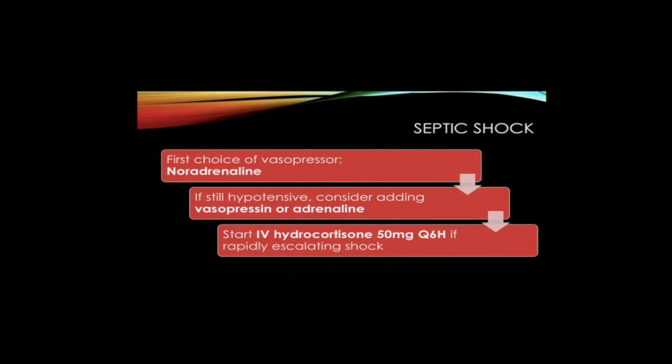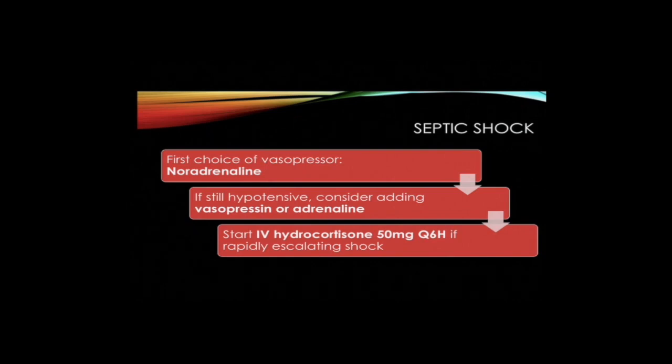Septic shock is the most common cause of shock seen in the medical ICU. In the context of septic shock, noradrenaline followed by vasopressin and adrenaline infusions are the most commonly used in our ICUs. Start intravenous hydrocortisone at 50 mg every 6 hours in patients who are unresponsive to fluids and vasopressor therapy. This is a list of resuscitation drugs available in emergency cards, standardized across all campus locations.